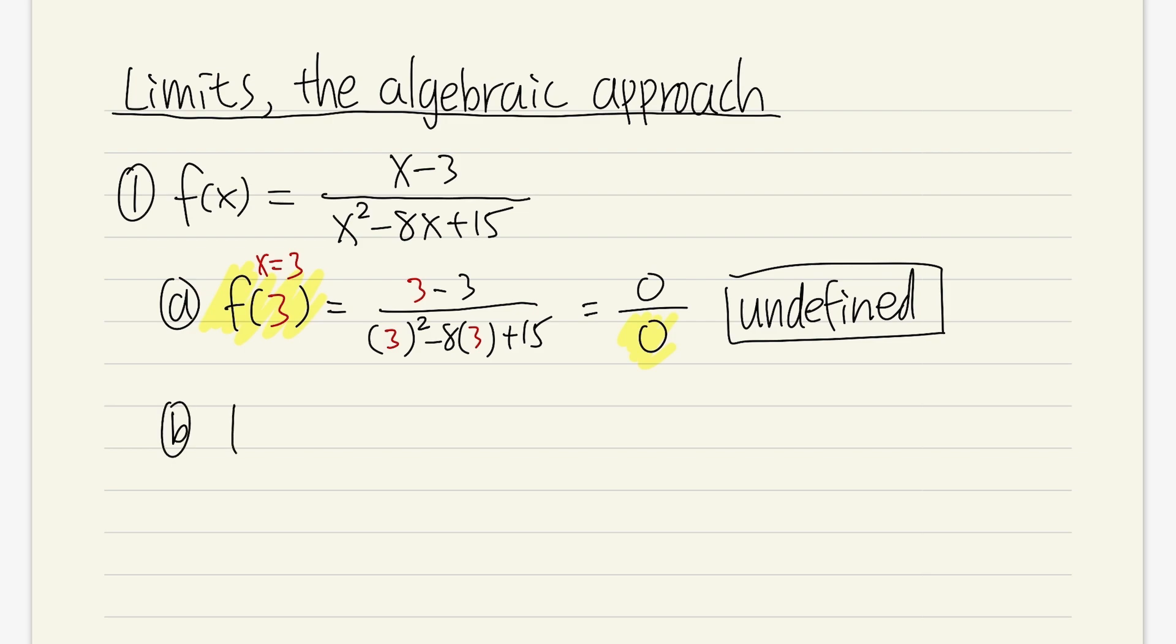Now, if we are talking about limit, then it's different. So let's say if we have the limit as x approaching 3 of the function, which is x minus 3 over x squared minus 8x plus 15. In this case, we already know that if we put 3 into all the x's, then we get 0 over 0.